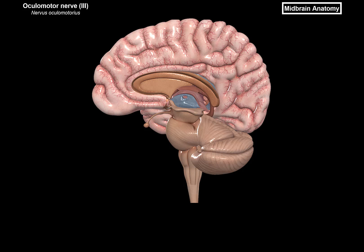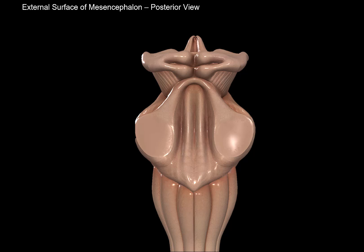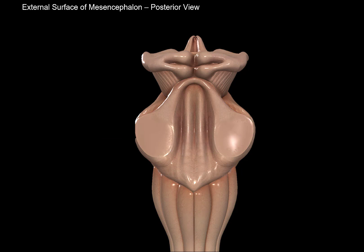Looking at this side view of the brain, we can see the spinal cord, medulla, cerebellum, pons, mesencephalon, and the diencephalon. If we remove the cerebellum and focus only on the brainstem from the posterior side, we see the mesencephalon, pons, and medulla. The mesencephalon, which is the midbrain, is what we're interested in now.